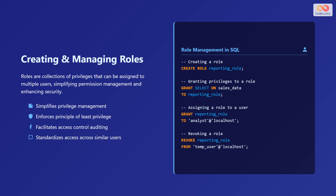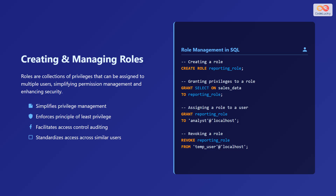Here are SQL code examples for role management. To create a role: CREATE ROLE reporting_role. To grant SELECT privilege on the sales_data table to the reporting role: GRANT SELECT ON sales_data TO reporting_role. To assign the reporting role to a user: GRANT reporting_role TO 'analyst'@'localhost'. To revoke the reporting role from a user: REVOKE reporting_role FROM 'temp_user'@'localhost'.